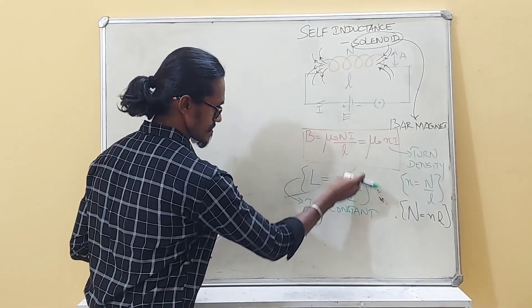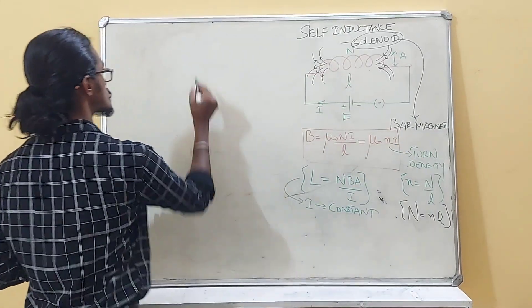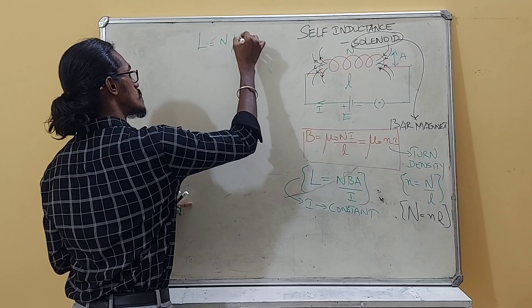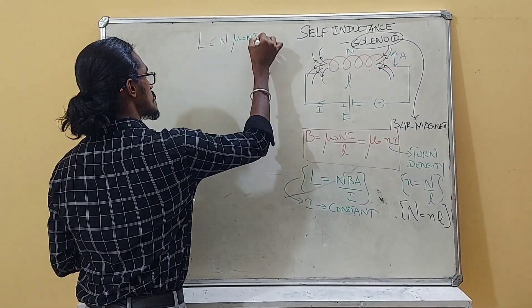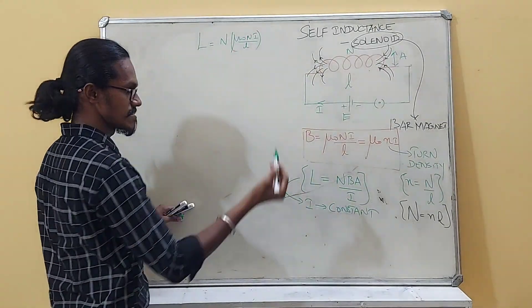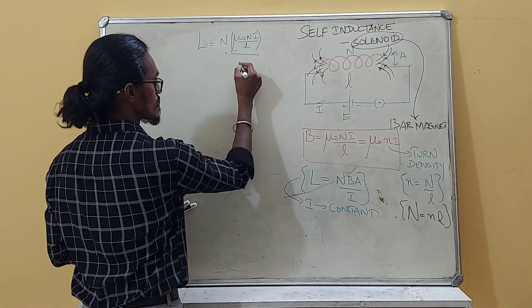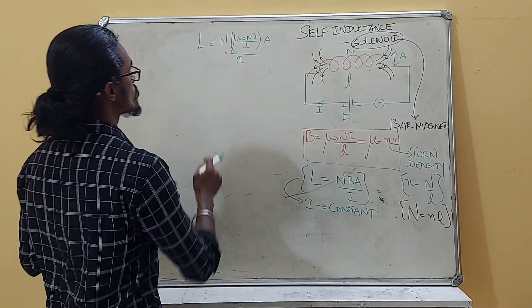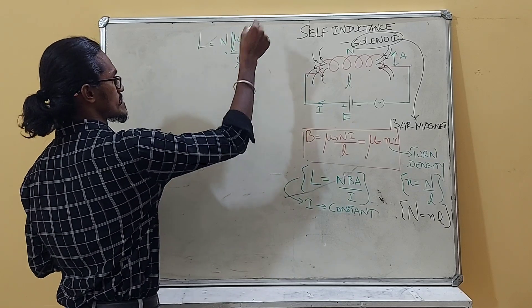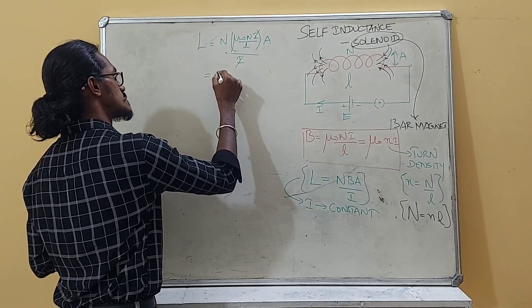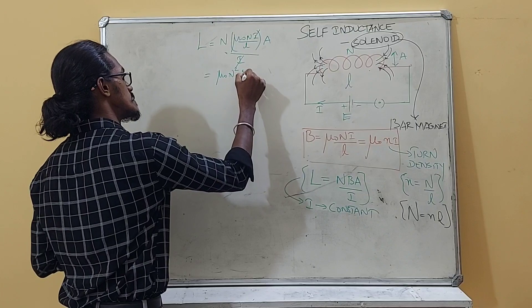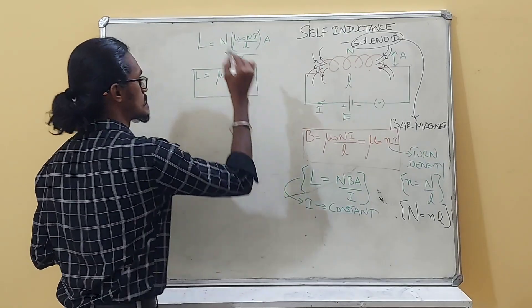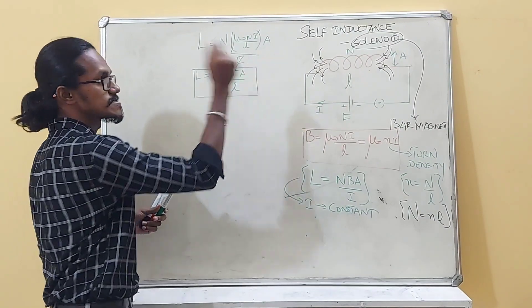If we substitute B into the expression, we get L = N × (μ₀NI/l) × A / I. We can cancel I and I, giving L = μ₀N²A/l. This is the self-inductance of a solenoid expressed in terms of total number of turns N.